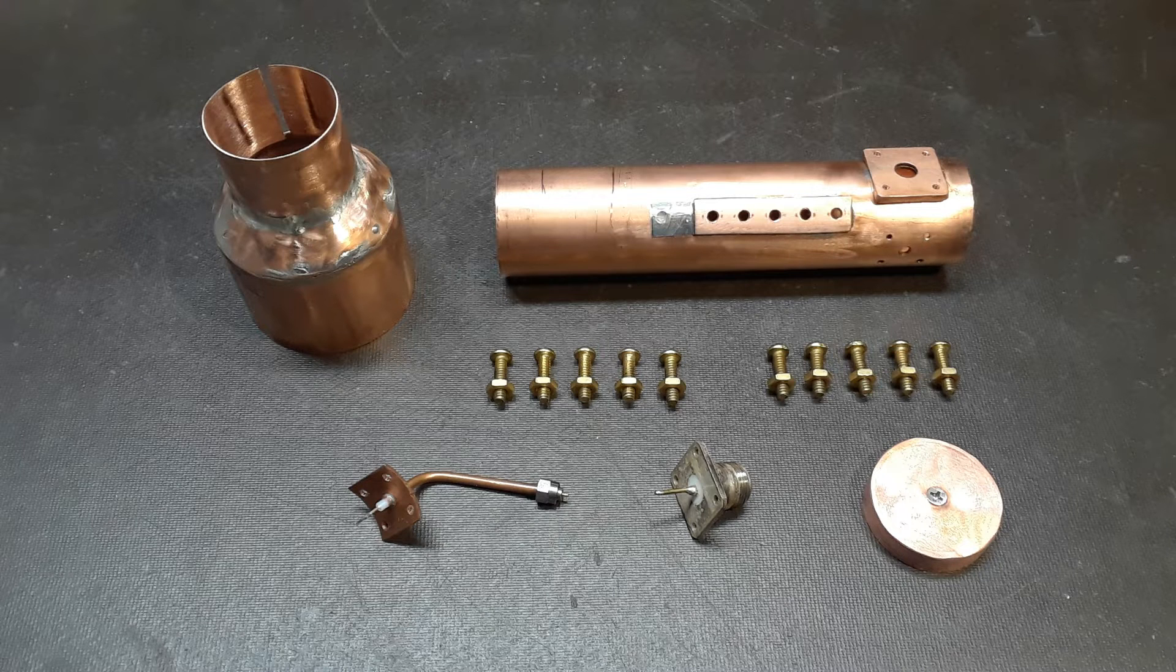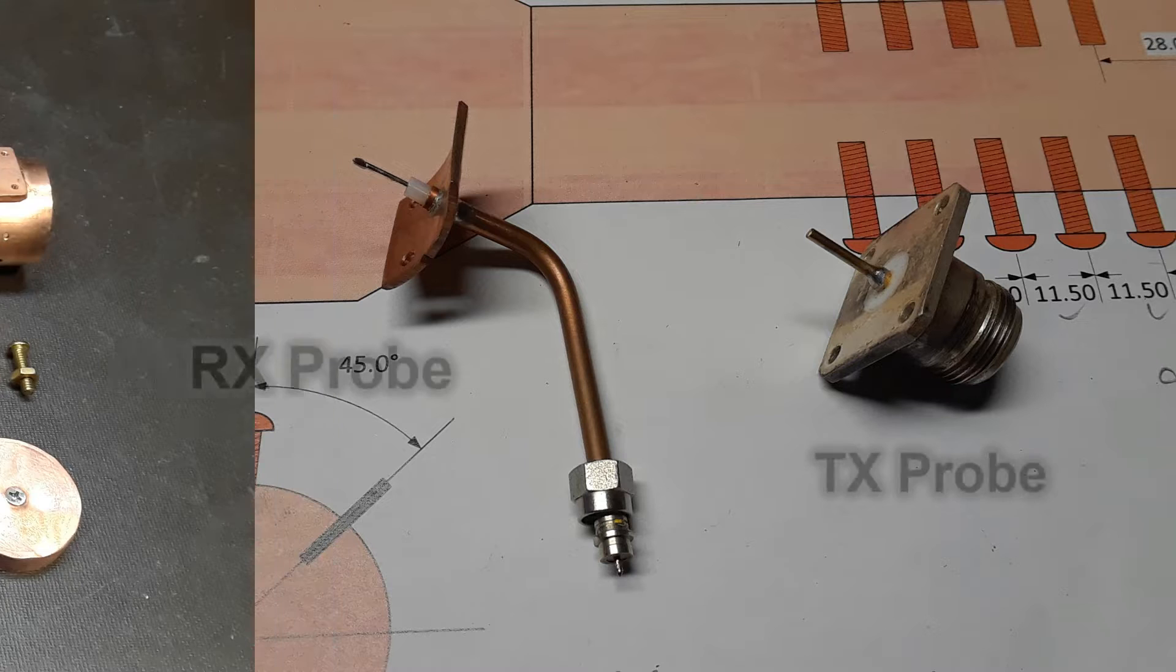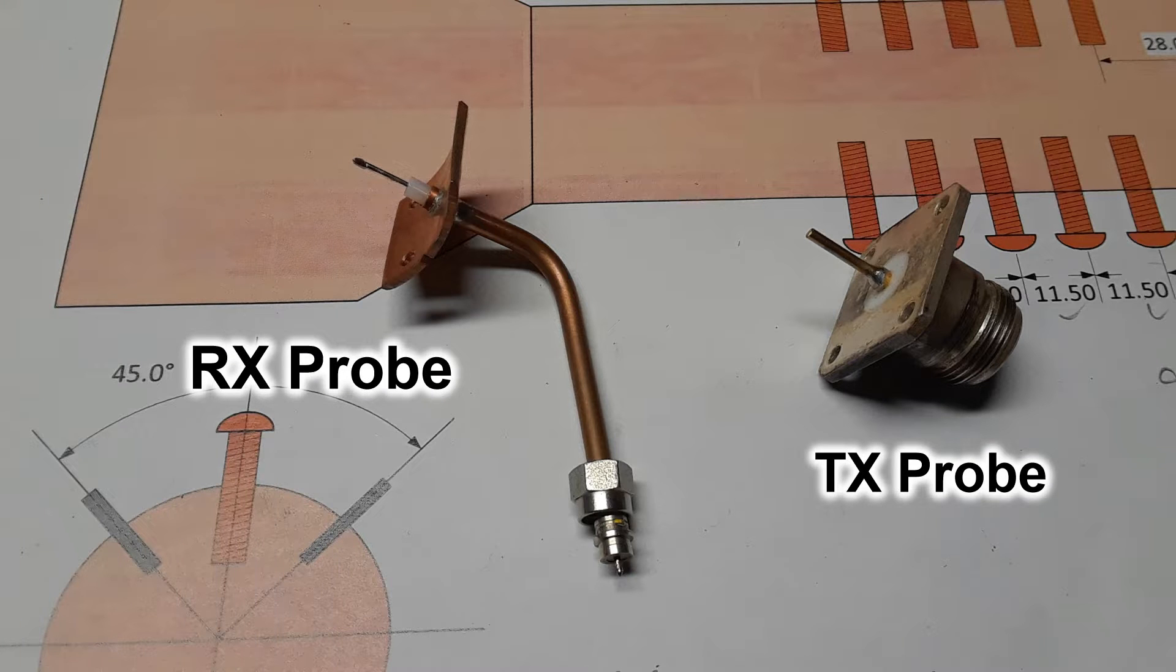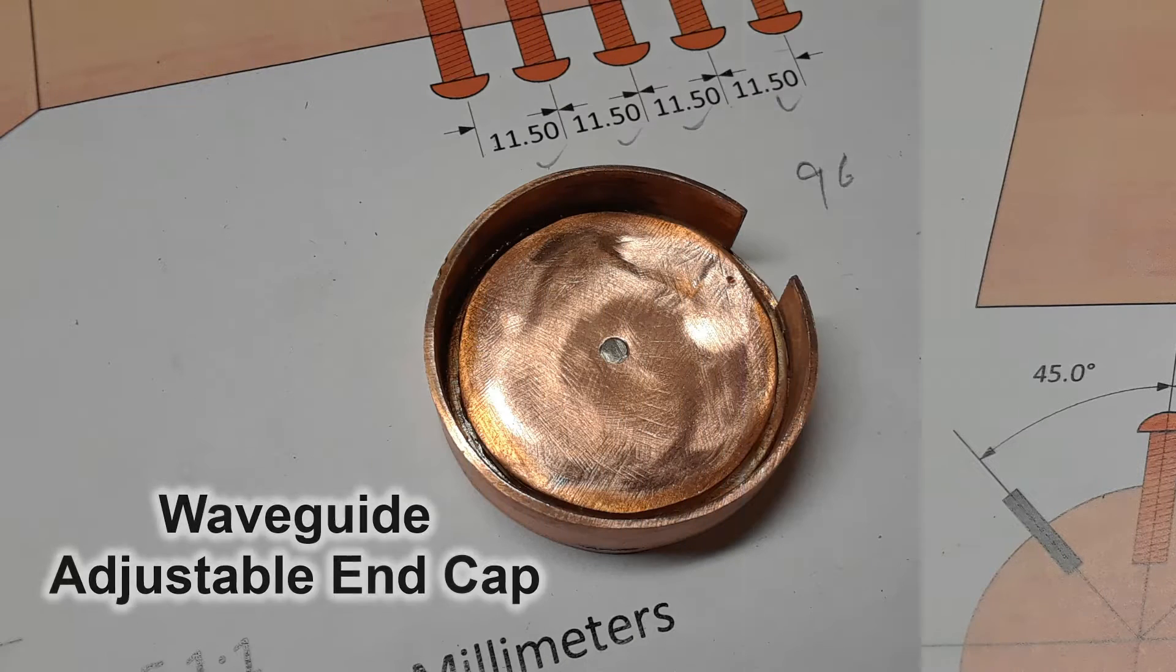A few years ago I did some experimenting with different types of circular feeds for 6 cm. And this is the one I came up with to use on my new feed for that band. In a few of these pictures here I show the parts breakdown on what it took to build one of these.